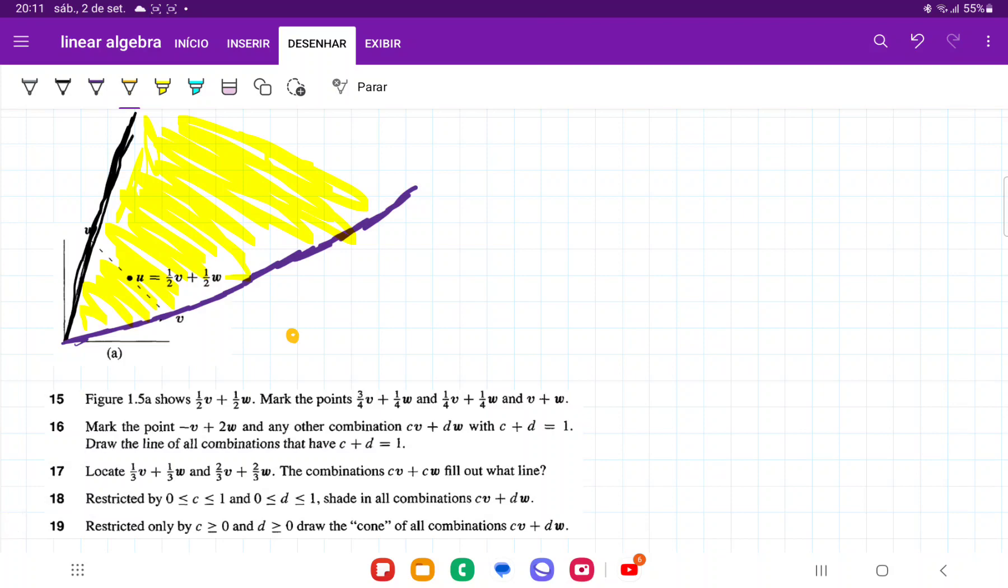At least for C is greater than zero and D greater than zero. So in this case, that is going to be the cone of all combinations CV plus DW.